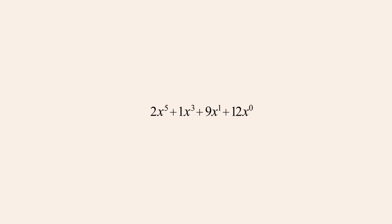As this example shows, when written in standard form the terms of a polynomial expression are ordered so that the exponents decrease going from left to right. Likewise, if one of the terms is simply a constant, then that term goes last. If a term contains a variable with no exponent, it is placed in the same order as if it had an exponent of 1. And monomials with a coefficient of 1 are normally written without a coefficient.